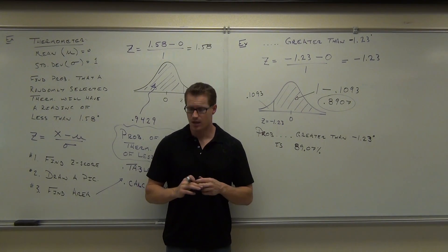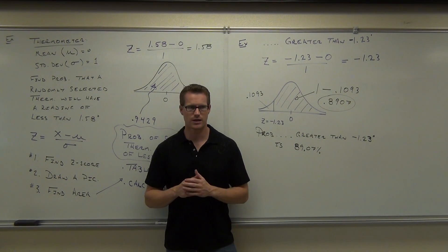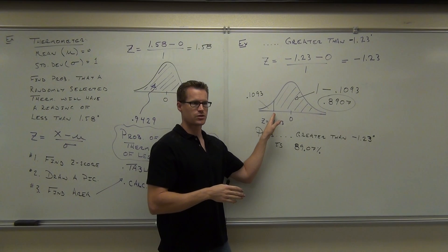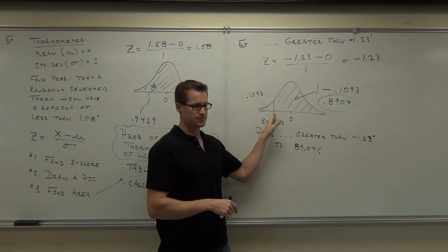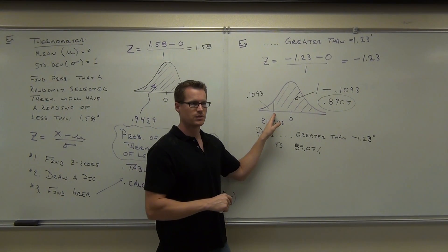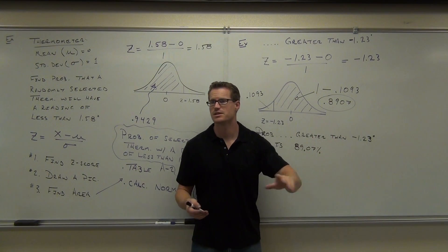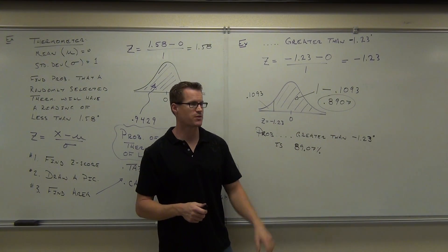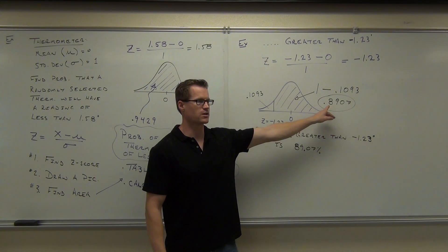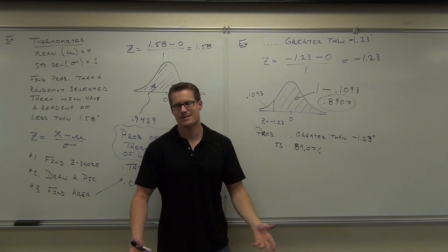Now, calculator people — if you want to not use the table, you don't have to, but you need to know how to punch these numbers in correctly. If you're going to do your area from left to right, this area actually starts at negative 1.23. So on your calculator, go to normalCDF. Plug in negative 1.23, press comma, then use 10 as the upper bound — it doesn't really matter, it doesn't end, but 10 makes no difference after that. Did it give you 0.8907? It gave me 0.89065. The calculator is a little bit more accurate than the table because the table always rounds.